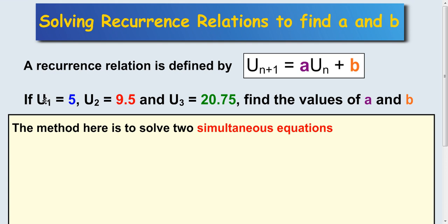We're told that u of 1 is 5, u of 2 is 9.5 and u of 3 is 20.75. We have to work out what the recurrence relation is and find the values of a and b.